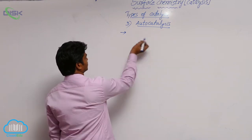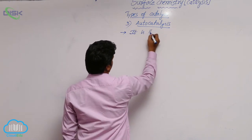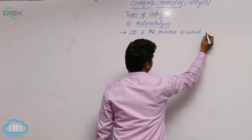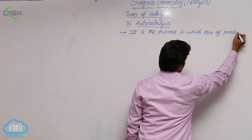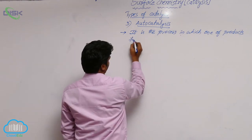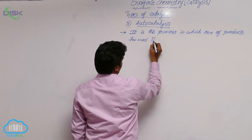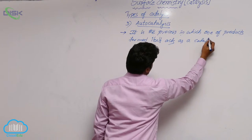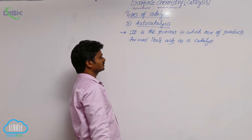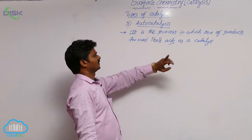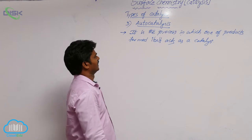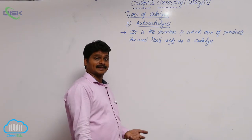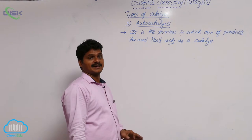So autocatalysis is the process in which one of the products formed itself acts as a catalyst. That process is called autocatalysis, and that substance which acts as the catalyst is called the autocatalyst.